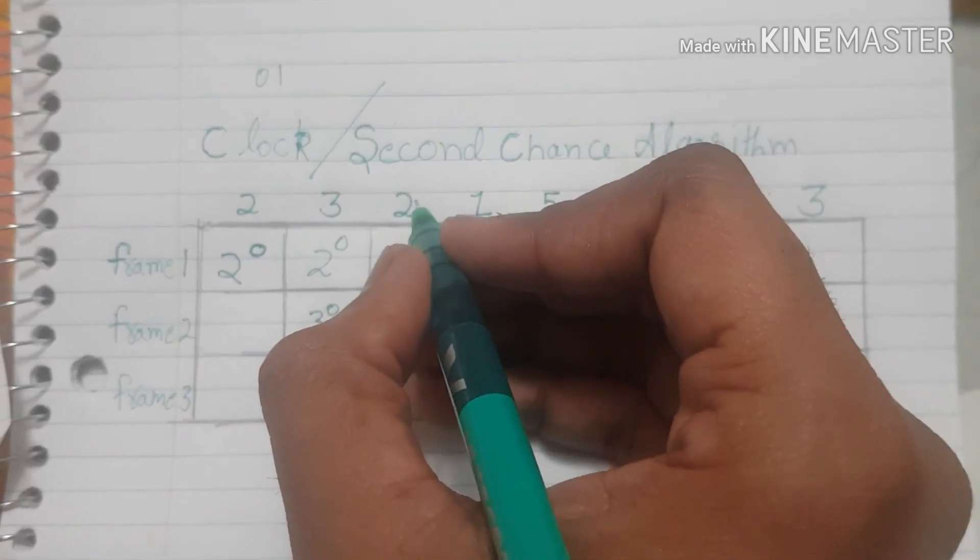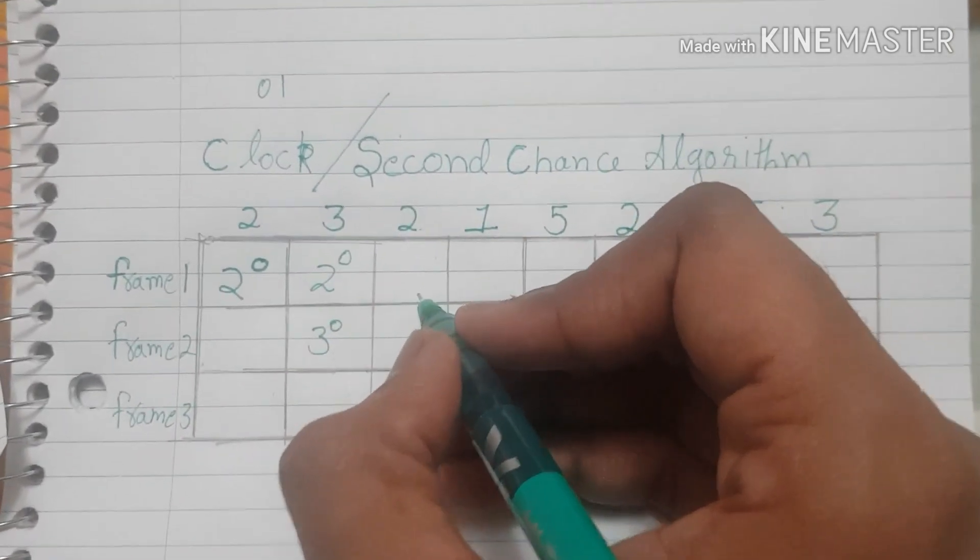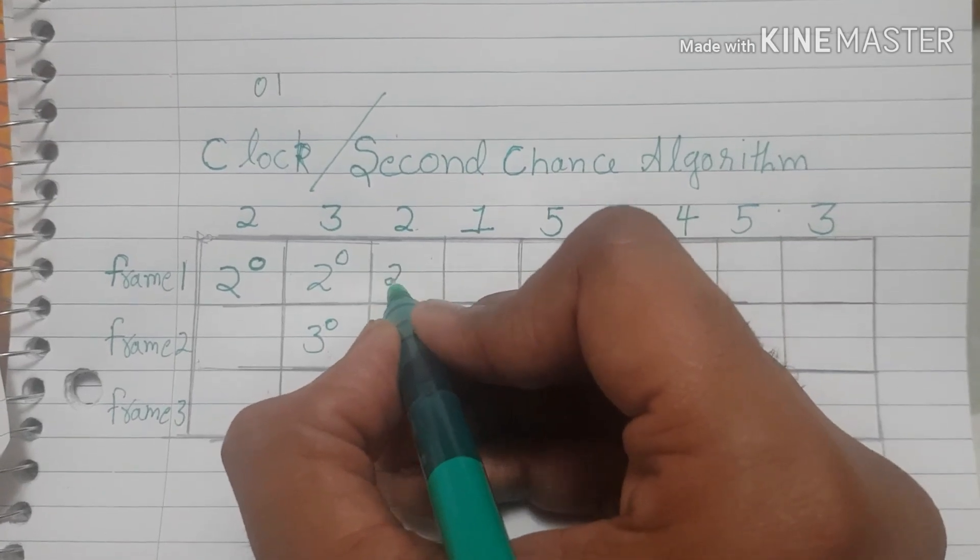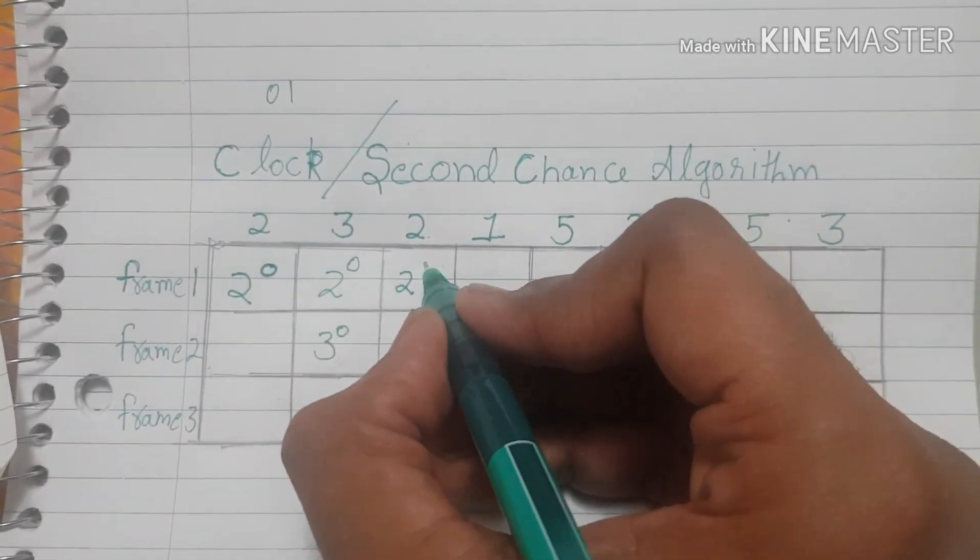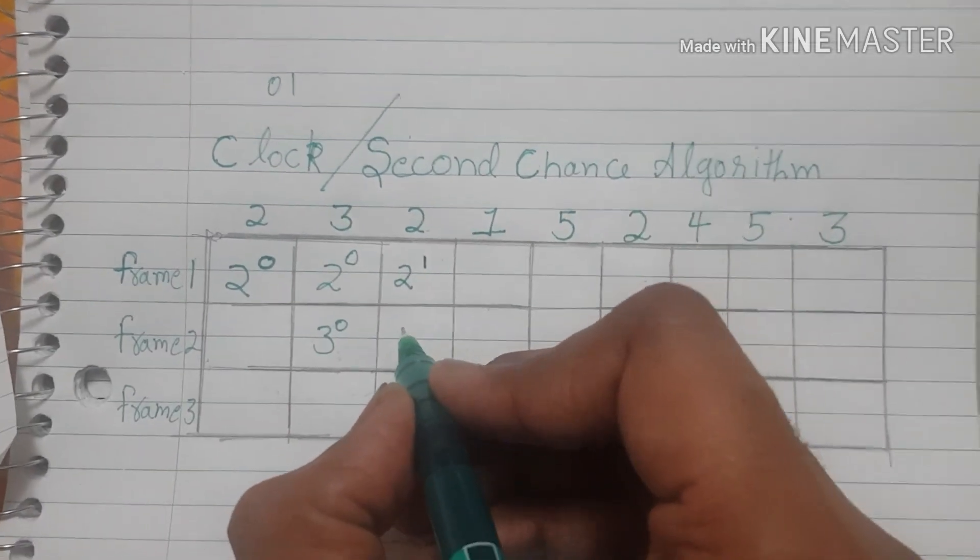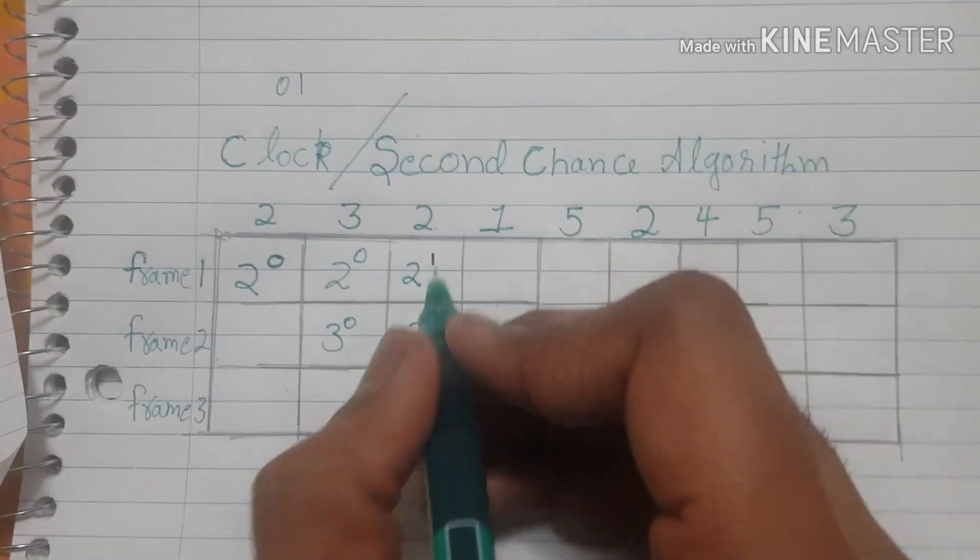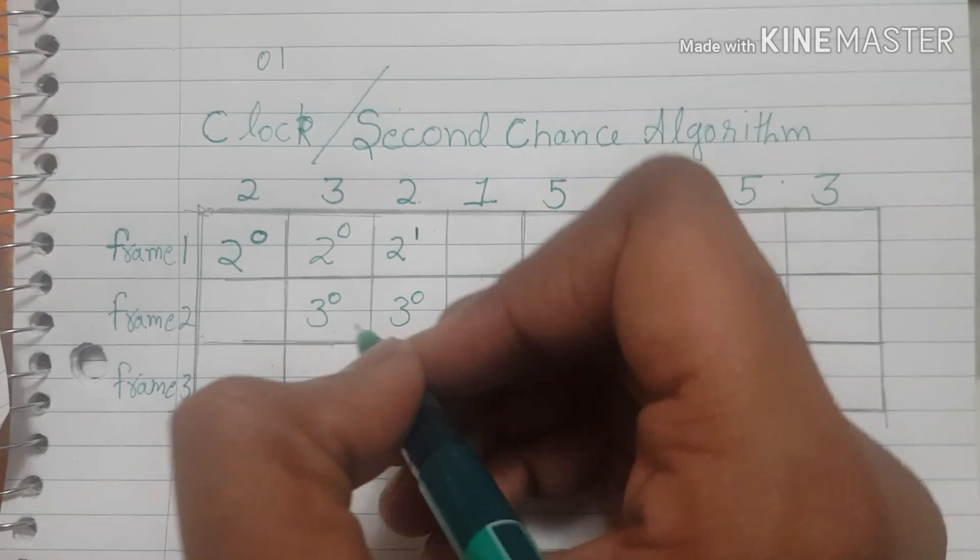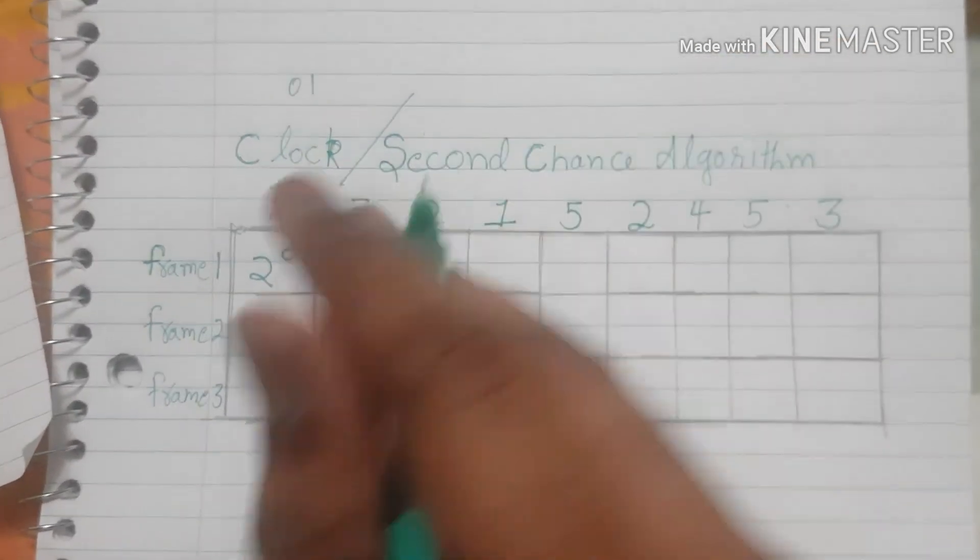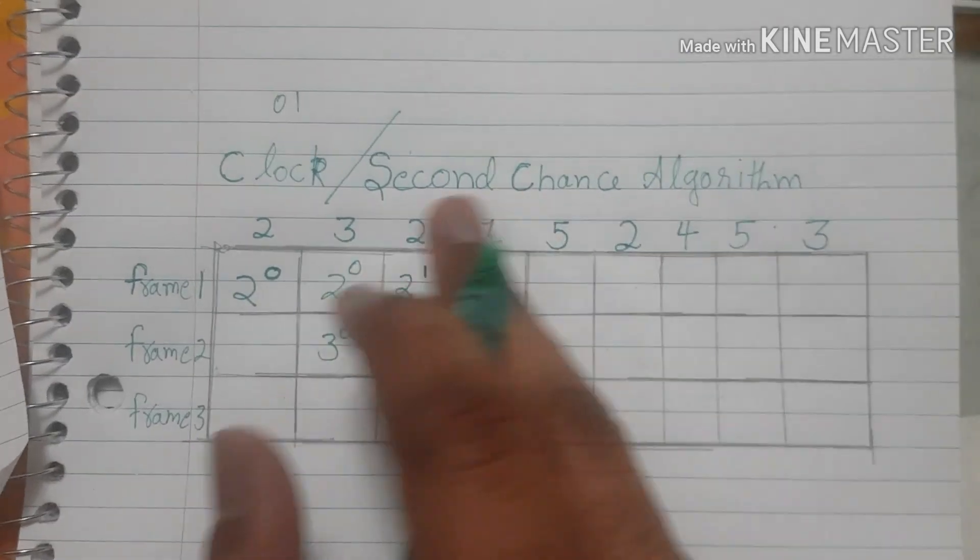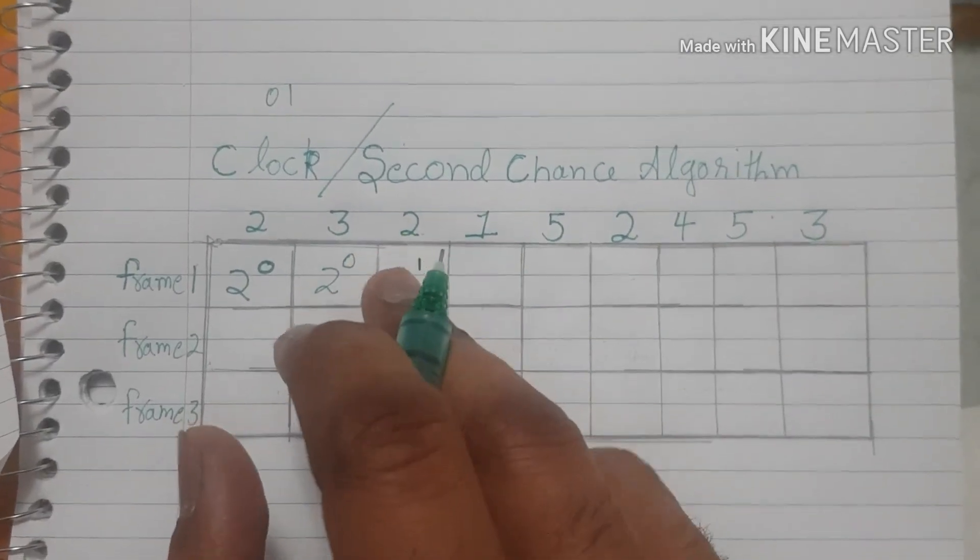Next time when we have to bring in 2, what we do is we just increment the value of reference bit so that happens to be 1, and this is still 0. This was a hit condition, so basically whenever we have a hit condition we just increment the value of reference bit of the page that led to that hit condition.